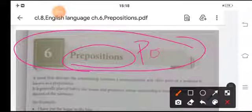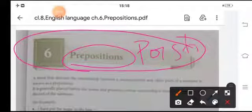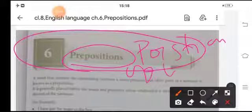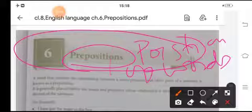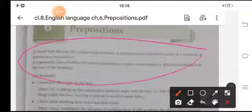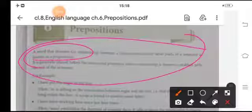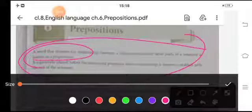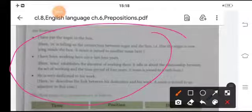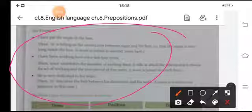Preposition means position of words. A word that denotes a relationship between a noun, pronoun, or other parts of the sentence is known as preposition. For example, you can say, I have put the sugar in the box. Where I have put the sugar? I have put the sugar in the box.